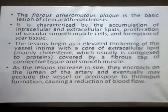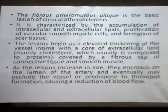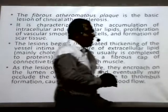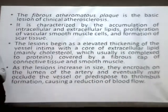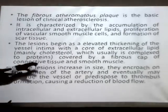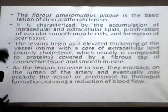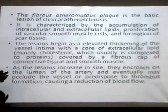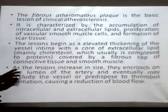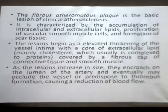The lesion begins as an elevated thickening of the vessel intima with a core of extracellular lipid — mainly cholesterol, which is usually complexed with protein — covered by a fibrous cap of connective tissue and smooth muscle. At the center core you find lipid deposition, which is cholesterol complexed with protein as a lipoprotein, covered by a fibrous cap. Usually these don't break up easily, but in later stages when the plaque becomes larger, rupture of the atheromatous plaque can occur.